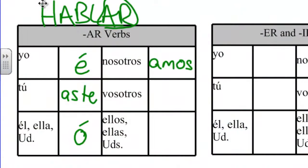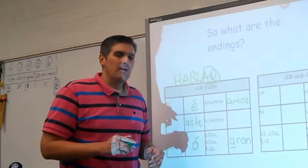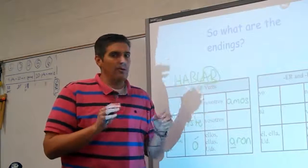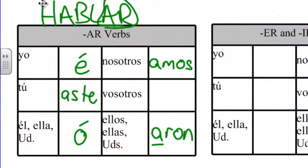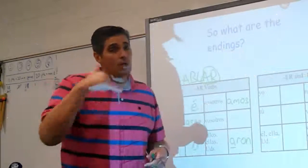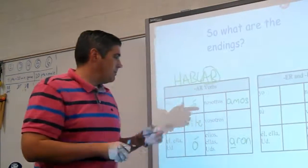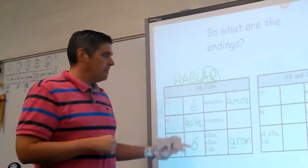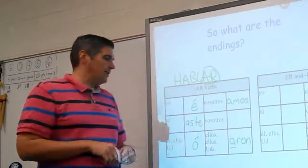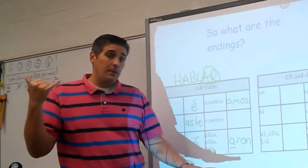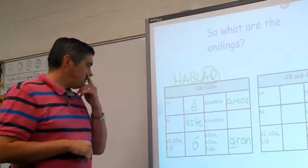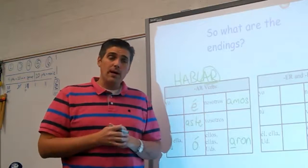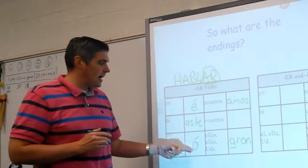Vosotros is just like the tú form — you just add -IS: hablasteis. Ellos/ellas/ustedes hablaron. The stress is on that A: hablaron. So the full conjugation: yo hablé, tú hablaste, él/usted habló, nosotros hablamos, ellos/ustedes hablaron. Ayer yo hablé con mi mamá. Mi mamá habló conmigo. Mi mamá y yo hablamos por teléfono. Mi hija y mi mamá también hablaron. Tú hablaste con un amigo ayer.